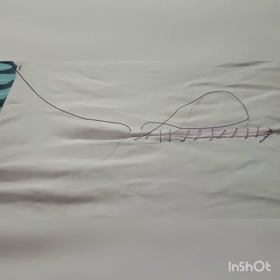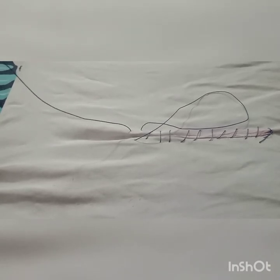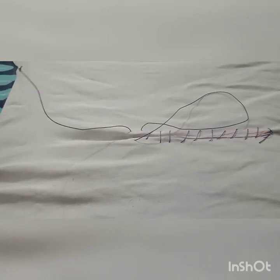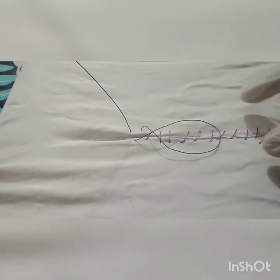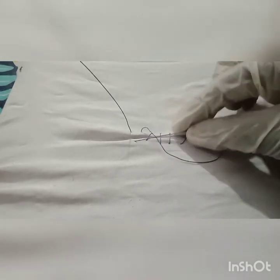This knot is useful for continuous sutures where at the end we have only one limb. So suppose this is a rectus sheath wound, and the last stitch should be left as a loop. It should not be completely taken or pulled.